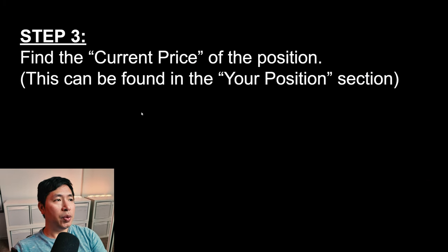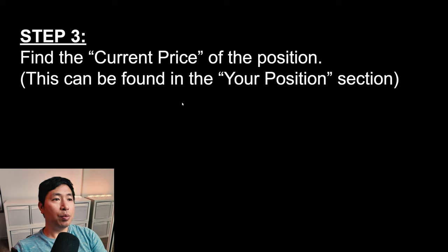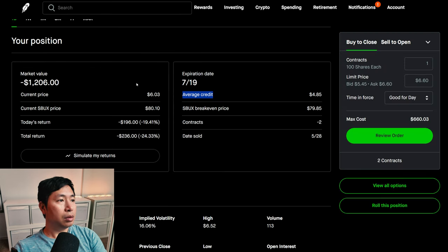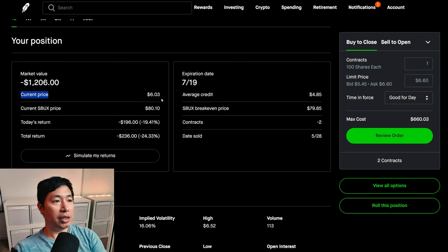Step 3: Find the current price of the position. This can also be found in the your position section. Now we're looking for the current price. Here it is — the current price: $6.03.